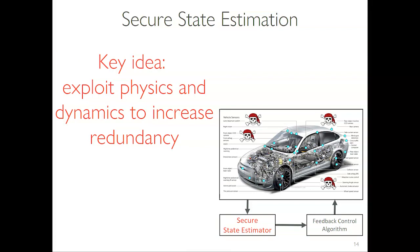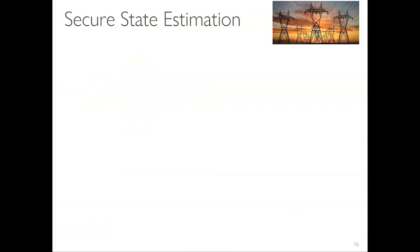The key idea is to exploit redundancy in the data. For example, with a motor you have a speed sensor and a sensor measuring the electricity going to the motor. From physics we know the relation between current and speed, so you can use one to sanitize the other. The challenge is scalability — in IoT you have hundreds of sensors and need to compute all correlations between sensor streams in real time. You cannot freeze the physical system to do analysis. It is a combinatorial, NP-hard problem.